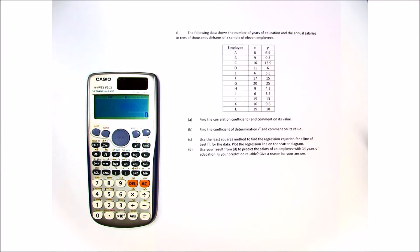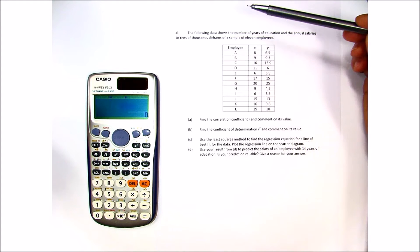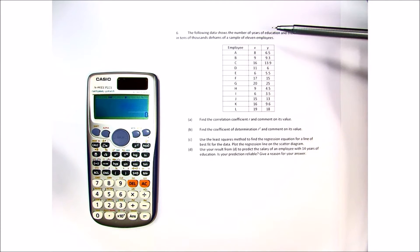Let's take a quick review of everything that you'll really need to know on a normal basis in order to do regression. So let's read through the question. The following data shows the number of years of education and the annual salaries in tens of thousands of dirhams of a sample of 11 employees.